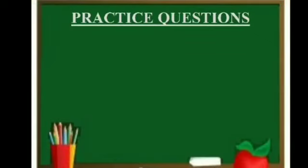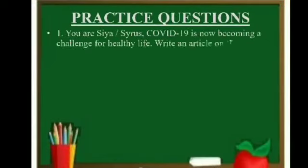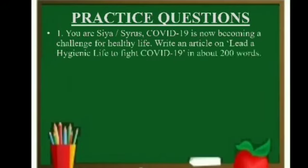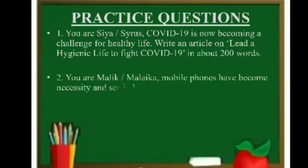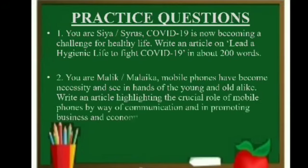Some practice questions for practice. First, you are Sia or Cyrus. COVID-19 is now becoming a challenge for healthy life. Write an article on 'Lead a Hygienic Life to Fight COVID-19' in about 200 words. Second, you are Malik or Malaika. Mobile phones have become a necessity and are seen in the hands of the young and old alike. Write an article highlighting the crucial role of mobile phones by way of communication and in promoting business and economy.